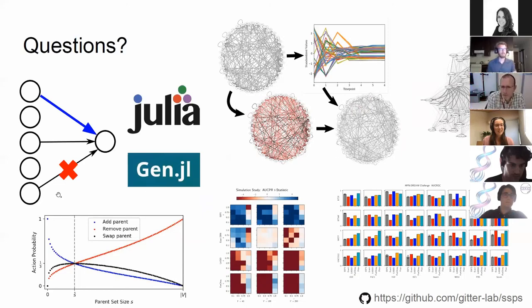We have a question from Paola: does the prior graph need to be acyclic? No, it does not. This method is definitely not restricted to acyclic graphs — the goal is to find a posterior distribution over directed graphs generally, not necessarily acyclic ones. Thank you very much to all the speakers of the previous and this session, everybody that submitted amazing work to the systems track of the ECCB, and of course all of you for attending the session. Enjoy the rest of the meeting.